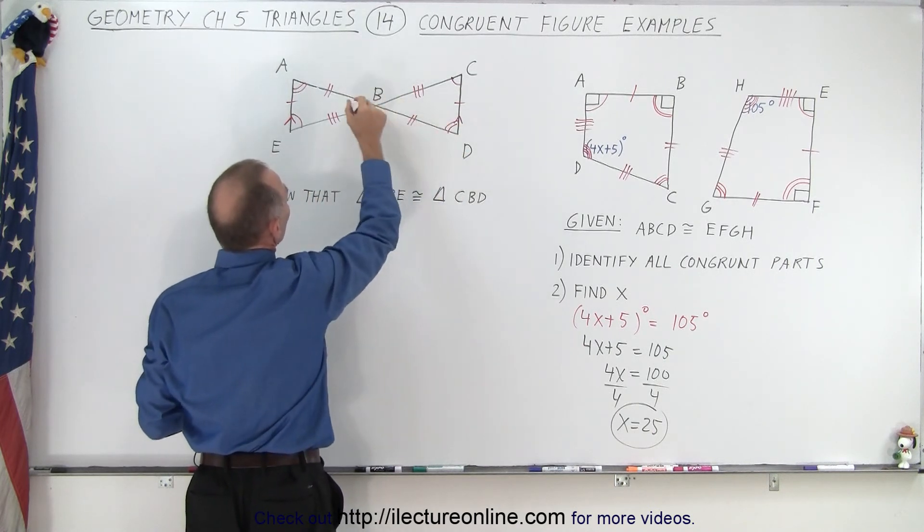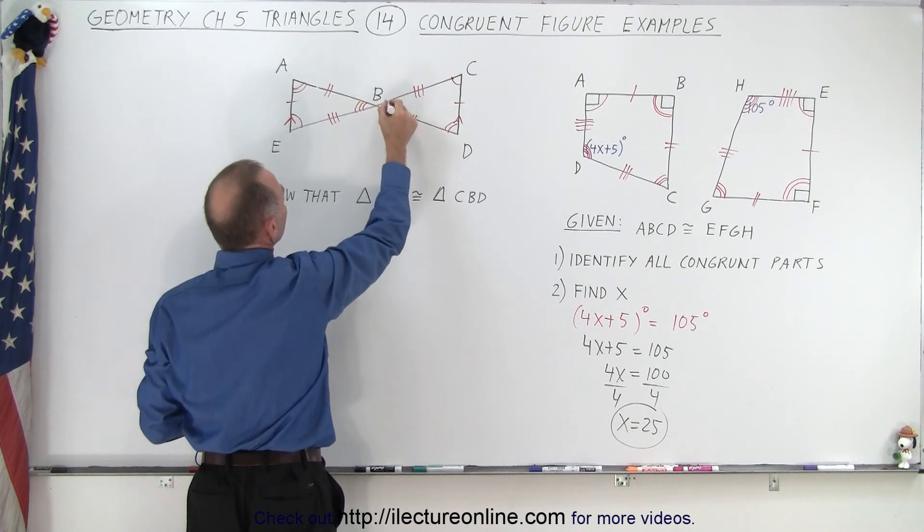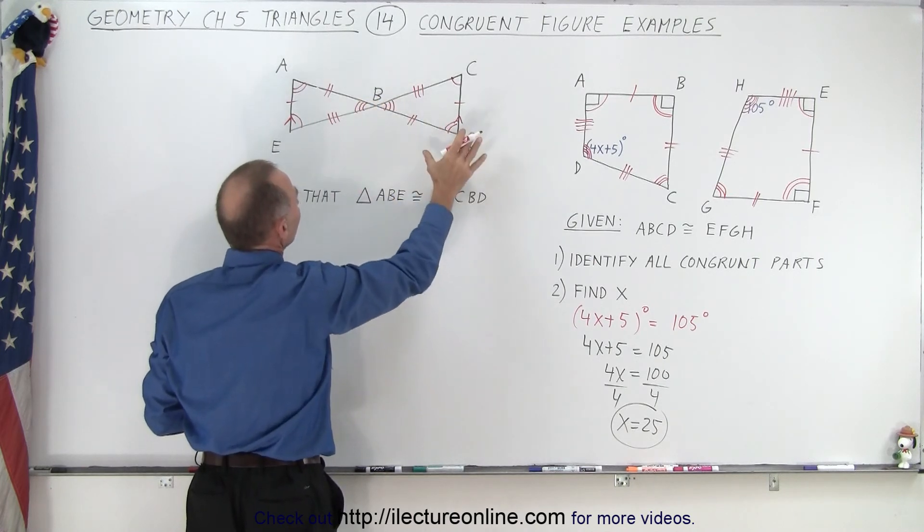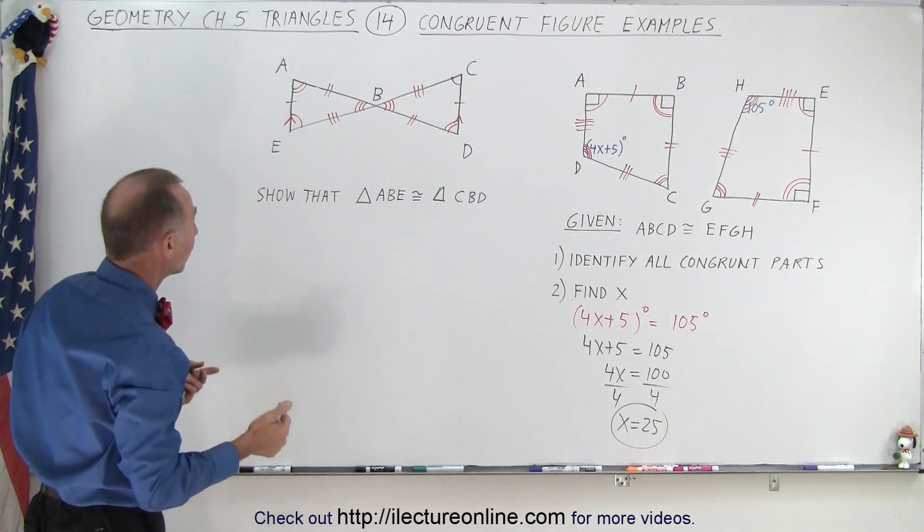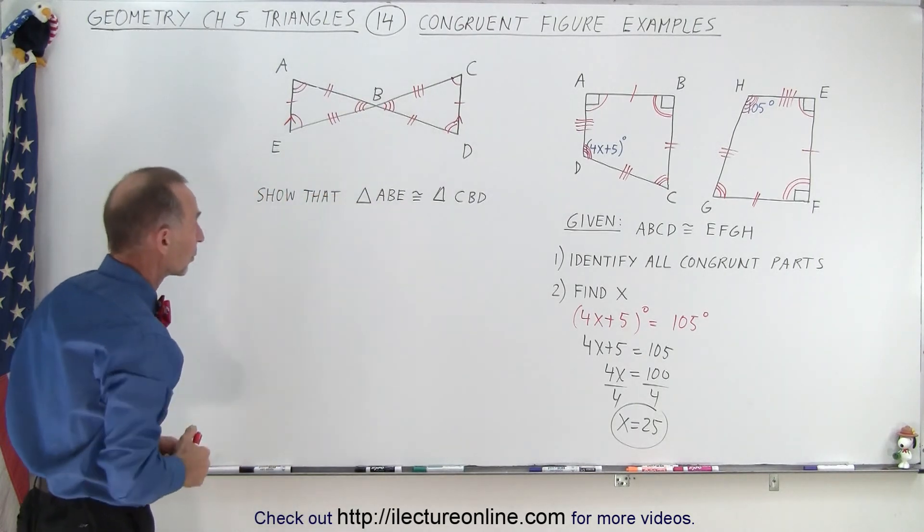And then finally, we can say that these two angles are opposite angles, and they must therefore be congruent as well. And so by that, we can see that not only are all the corresponding sides congruent, we can also see that the corresponding angles are congruent.